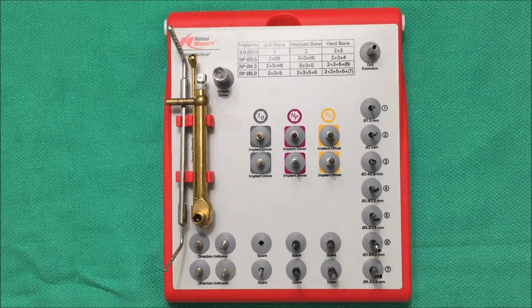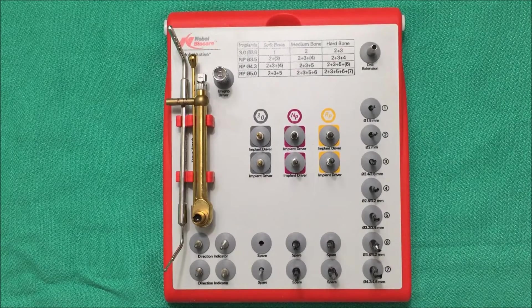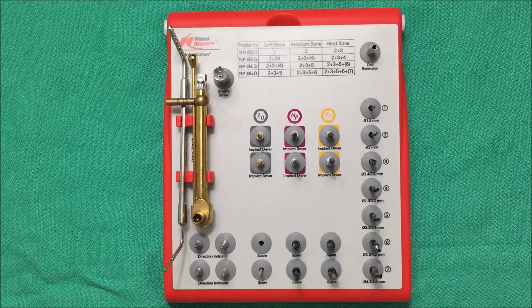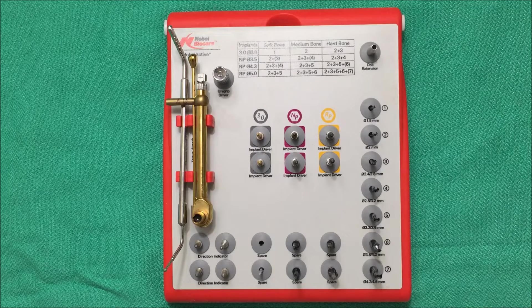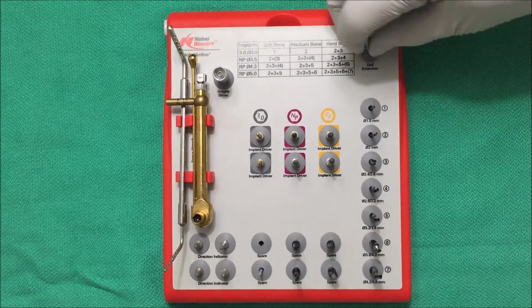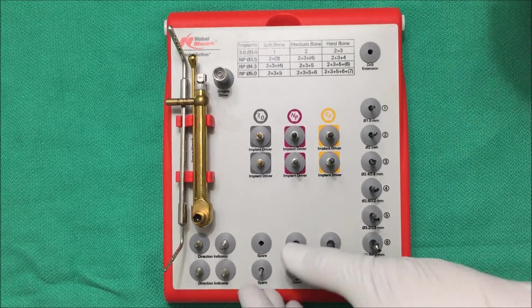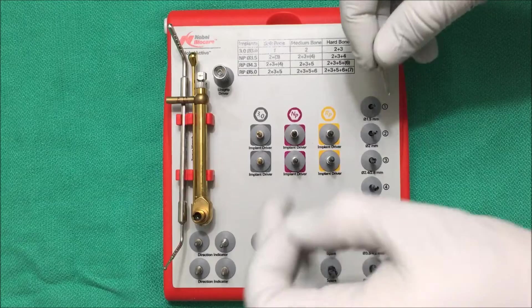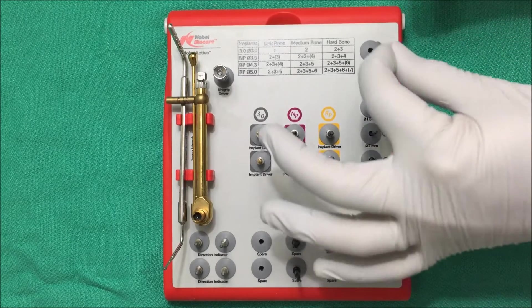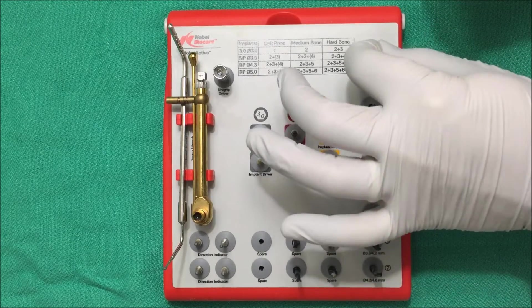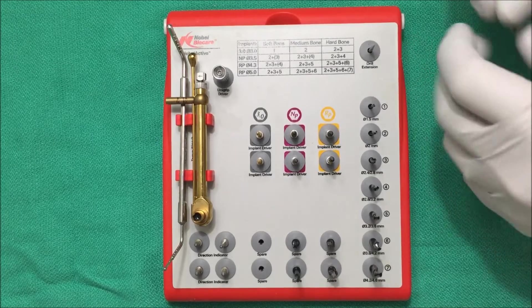So this is the Nobel BioCare Active Surgical Kit. I'm going to go ahead and explain all the parts in the order in which you might use them in actual surgery. So the first thing I'm going to do is switch out this drill extender for this pilot drill because it really doesn't make any sense for the drill extender to be here because you don't use it very often but you do use a pilot drill pretty much every time.